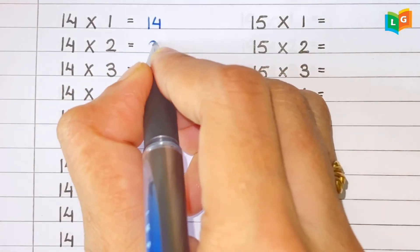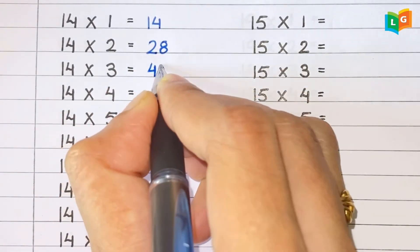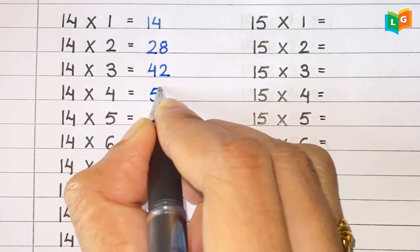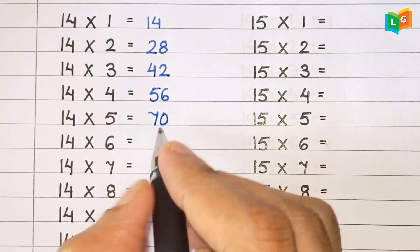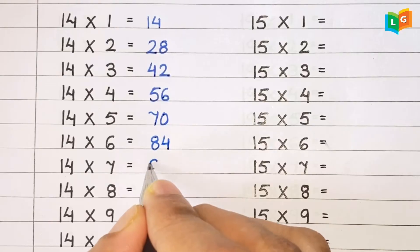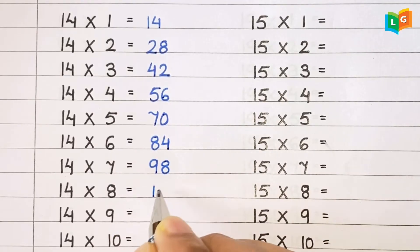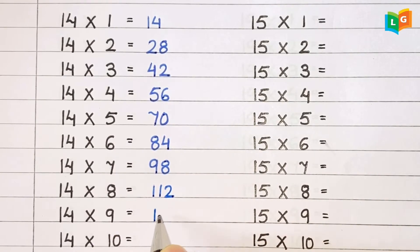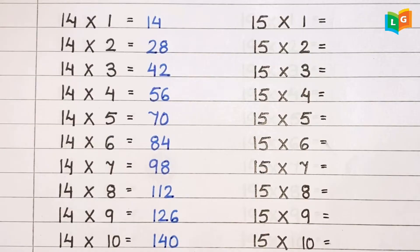Now let's see table of 14. 14 1s are 14, 14 2s are 28, 14 3s are 42, 14 4s are 56, 14 5s are 70, 14 6s are 84, 14 7s are 98, 14 8s are 112, 14 9s are 126, 14 10s are 140.